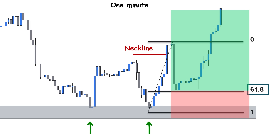Once again our stop will be below the swing low and we will target the next market structure level. Keep in mind that we don't know where the end of this move is going to be, so if the price keeps pushing to the upside we will adjust our retracement tool with the latest move. This will continue until the price retraces and activates our order, or it pushes forward and reaches our target — then we cancel the whole trade.